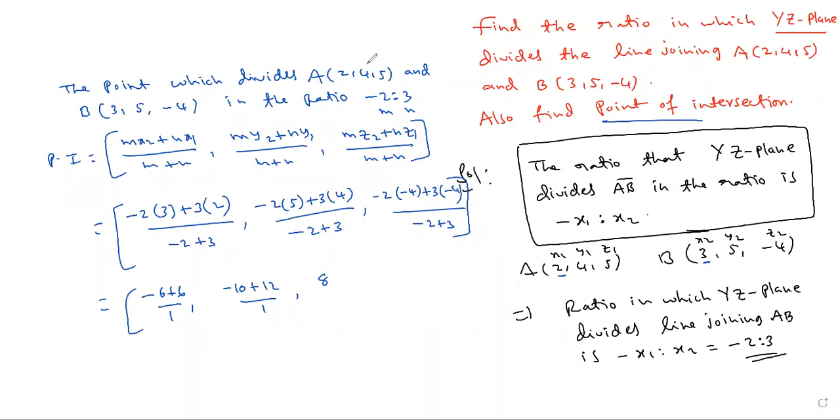3 into 5. This is Z1, this is Z2. Mz2 plus Nz1. 8 plus 15, this is 8 plus 15 by 1.